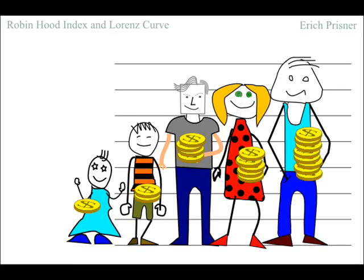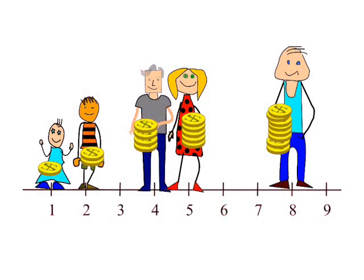We have 5 persons and they have 1, 2, 4, 5 and 8 coins. It is best to order them from poor to rich on a line. Each person goes to the number indicating his or her wealth.